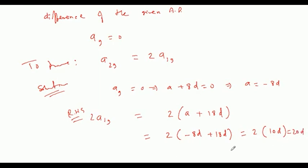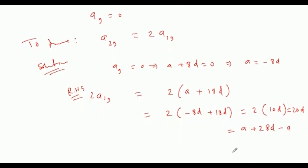अब इस 20D को A plus 28D और minus A लिख सकते हैं. minus 8D करते हैं तो 20D बन जाएगा. A extra हो जाएगा तो इसमें minus A भी देते हैं. तो ये आपका हो जाएगा A₂₉.